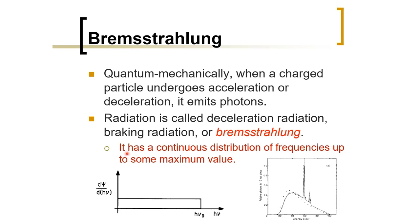It has a continuous distribution of frequencies up to some maximum value. It means that it has something like this — some lines — but with a maximum value corresponding to the energy of the electrons. This is the essential way to generate X-rays.